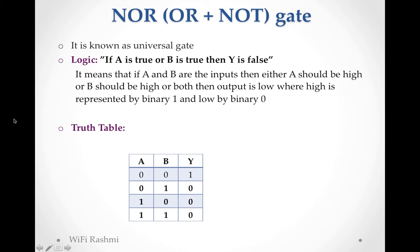First we have to learn what is NOR gate. Before going to NOR gate, you should know OR and NOT gate. OR gate logic: if A is true or B is true then Y is true. NOR is the opposite - if one is true then Y is false. NOR gate is created using OR and NOT gate, that's why it is called NOR. It is known as a universal gate.